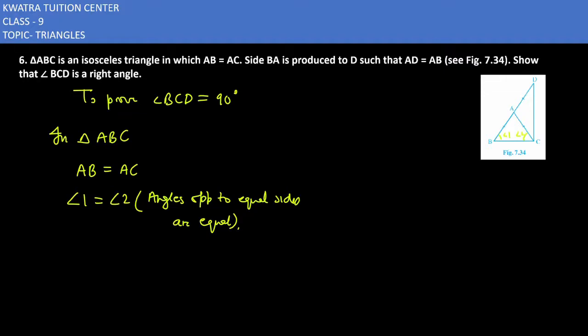Next property: AB is AC is equal, and AD is equal to AB. So what does this mean? That AC is equal to AD. In that case, what we can see is angle 3 would be equal to angle 4. Angles opposite to equal sides are equal.